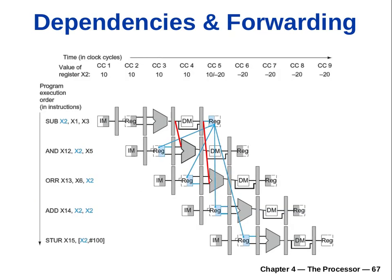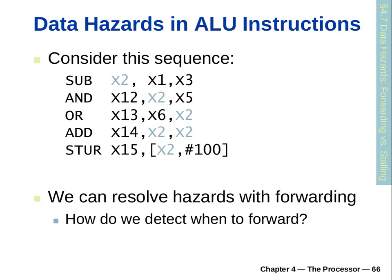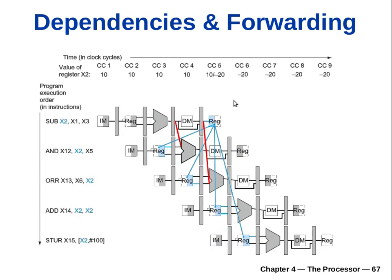Let's continue our discussion on hazards. What we are looking into is: we have pipelining, however depending on the sequence of instructions, we may not be able to take advantage of the most efficient pipelining because of certain hazards. This is an example of a data hazard in ALU instructions.